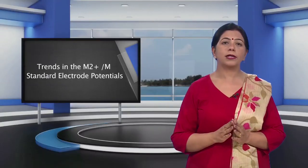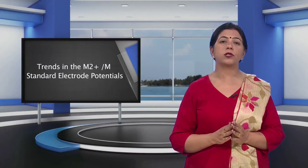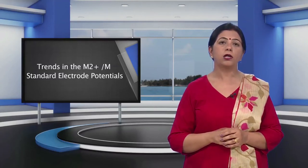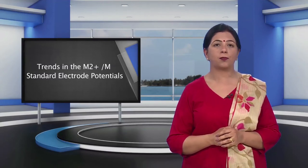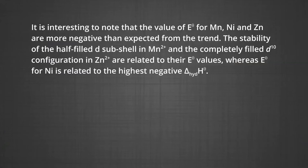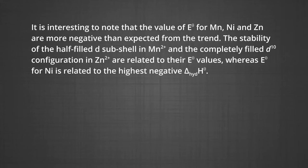The general trend towards less negative standard electrode potential values across the series is related to the general increase in the sum of the first and second ionization enthalpies. It is interesting to note that the E° values for manganese, nickel, and zinc are more negative than expected from the trend. The stability of the half-filled D5 in Mn2+ and completely filled D10 in Zn2+ are related to their E° values; the E° value for nickel is related to its highest negative hydration enthalpy.